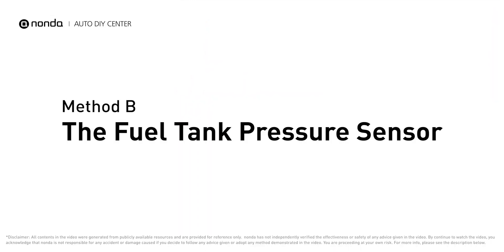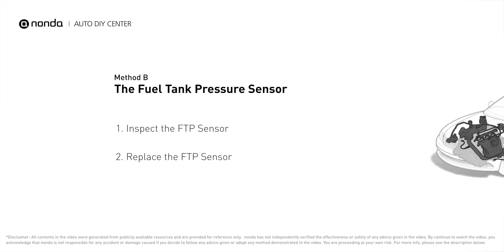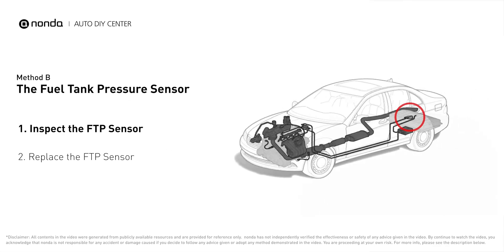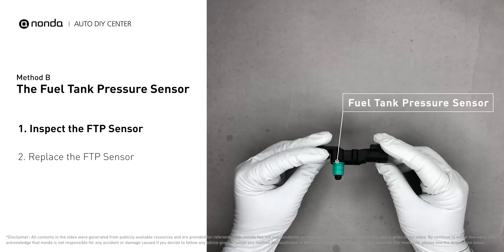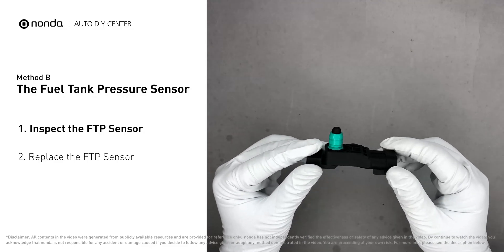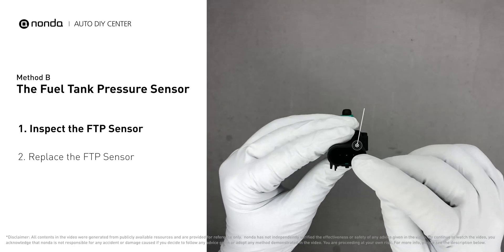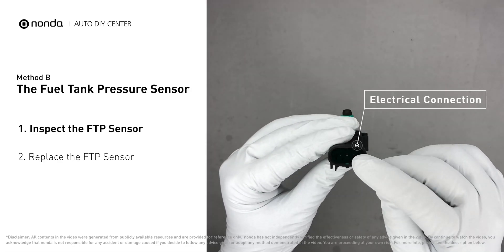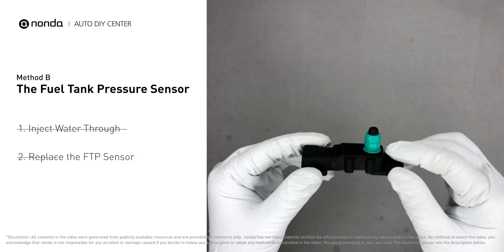Method B: the fuel tank pressure sensor. The fuel tank pressure sensor is part of the fuel pump assembly and is usually mounted on top of the tank. First, carefully remove the fuel tank pressure sensor from the fuel tank. Check the seal and the electrical connection for any damages. If damages are found, replace the fuel tank pressure sensor.